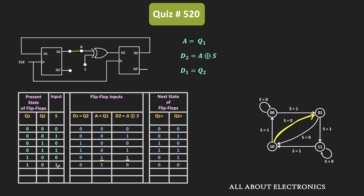When the present state is 1-0 and S is 1, it goes back to the 0-0 state. Finally, when both Q1 and Q2 are 1-1 and S is 0, Q1+ = 1 and Q2+ = 1, so it remains in the same state. When S is 1, Q1+ and Q2+ equal 1-0, so it transitions to the 1-0 state. This completes the state table and verifies the given state diagram.